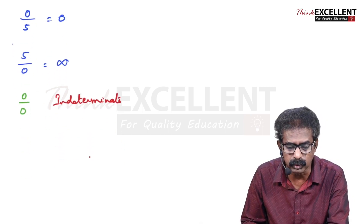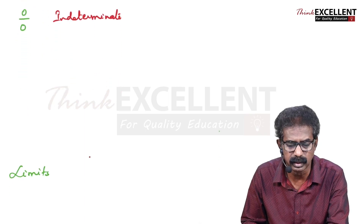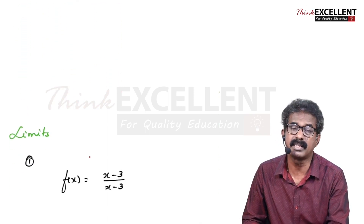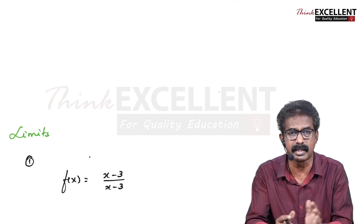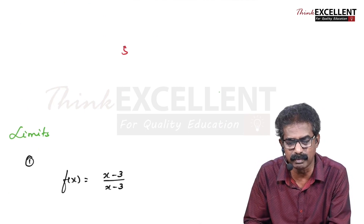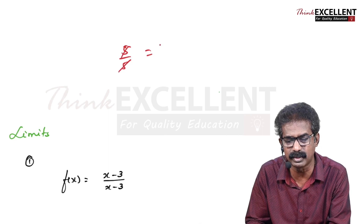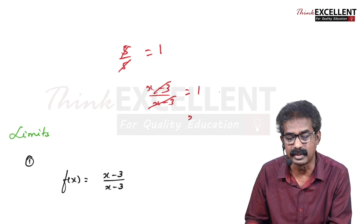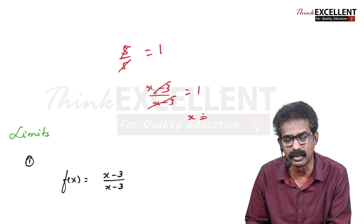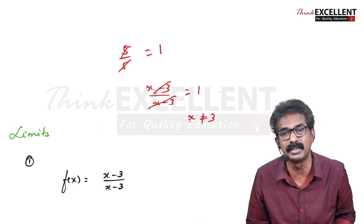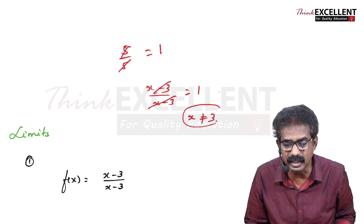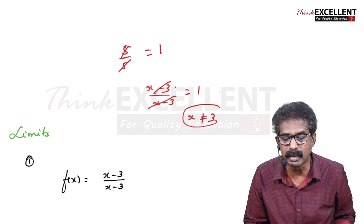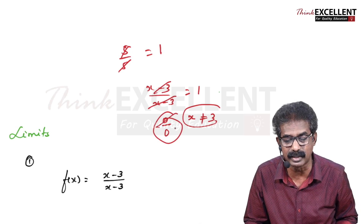Now I'm going to explain limits using examples. Look at the first example: f(x) = (x − 3)/(x − 3). You might say it's simple — five by five, cancel and you get one. So for x − 3 divided by x − 3, we cancel and the answer is one, but only provided x is not equal to three. Suppose x is equal to three — then you are getting three minus three, which is zero by zero, indeterminate. You can't cancel zero over zero.